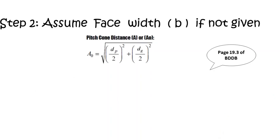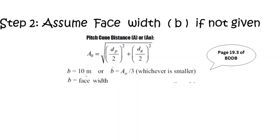Next, assume your face width based on the pitch cone distance. First calculate pitch cone distance A0 = √((DP/2)² + (DG/2)²). Then assume face width as either 10 × module or A0/3, whichever is smaller — that is your face width. This is on page 19.3 of the Bhandari design data book.